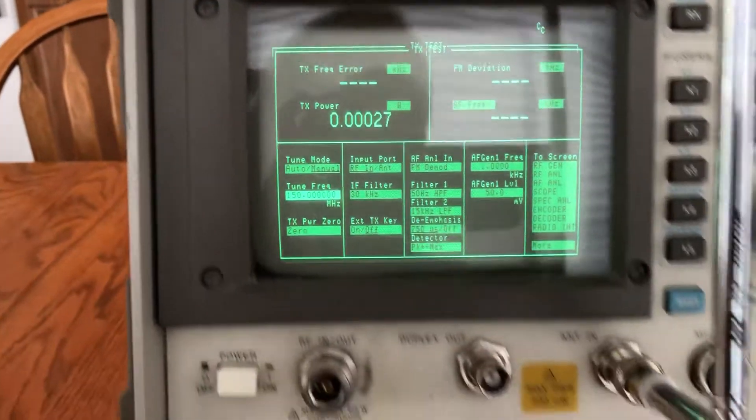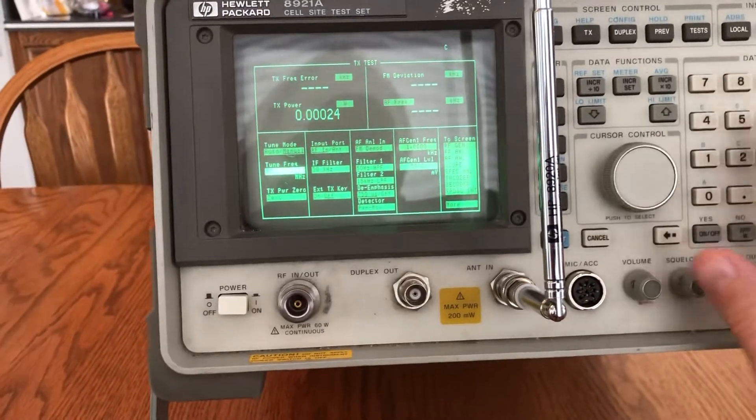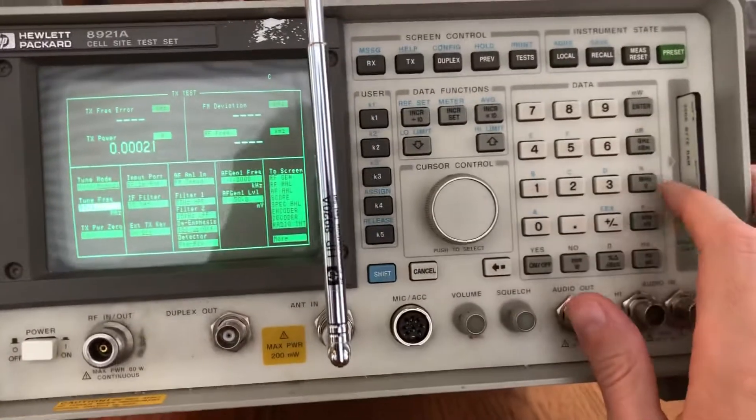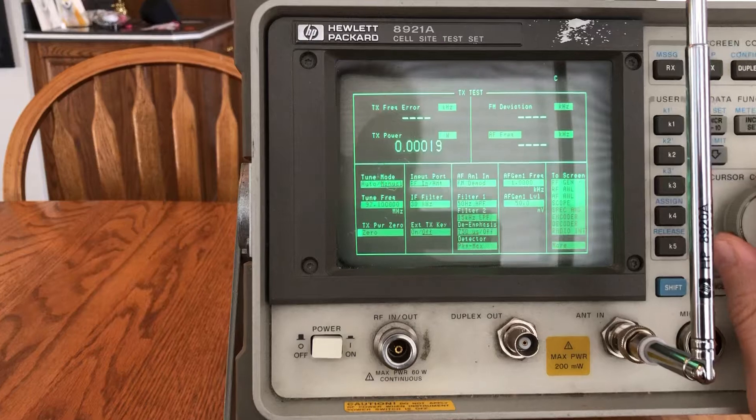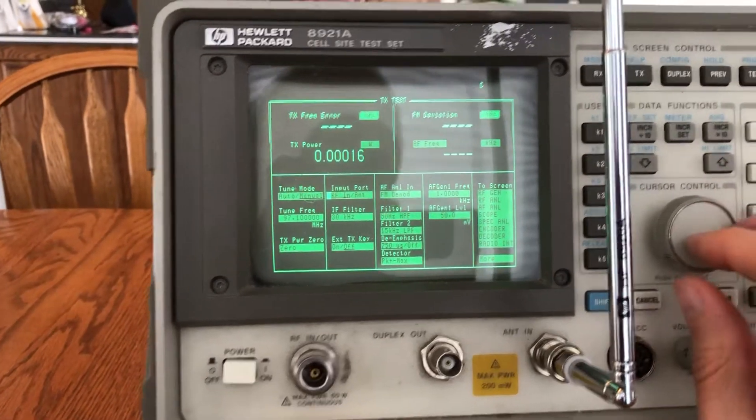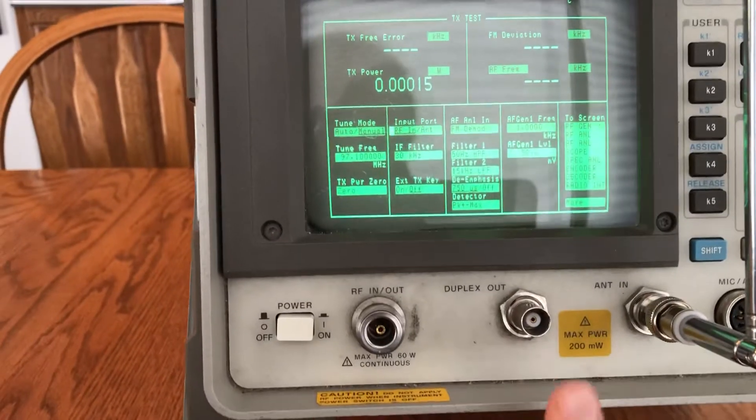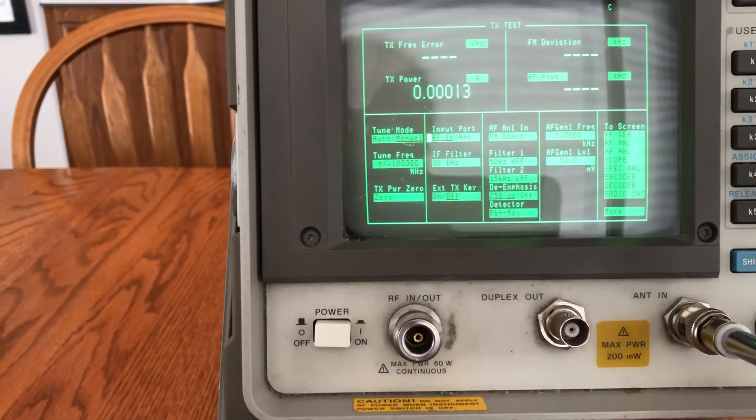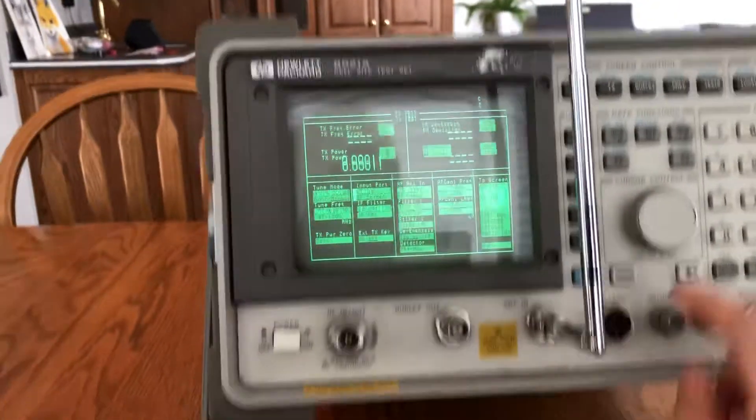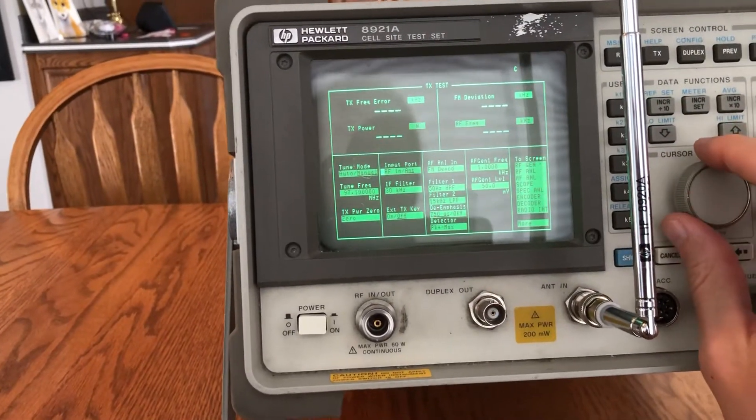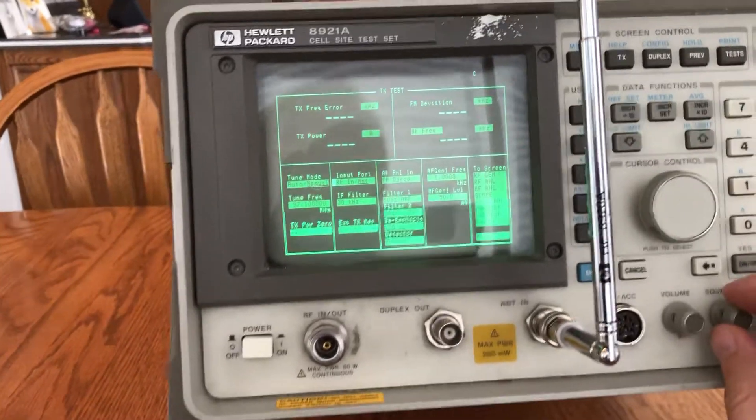We're going to tune to a radio station of 97.1 megahertz, and then we're going to come down and switch. Instead of using the RF import, which is right here, we're going to use the antenna import, since we have an antenna attached. Switch that, and then now you should be able to notice.